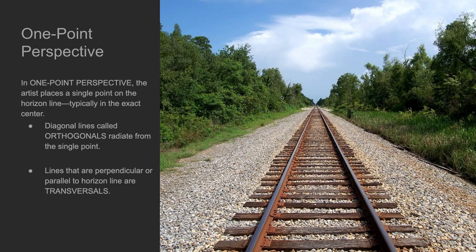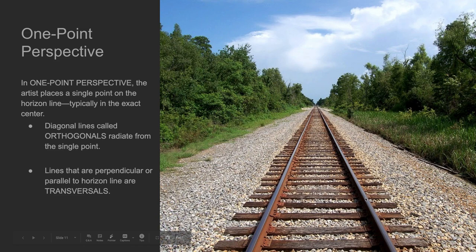Orthogonals are the diagonal lines that recede into space — they are parallel lines that create these diagonals. The horizon line is where the ground meets the sky; it is flat and it is in front of you. The vanishing point is where all the orthogonals meet. The vantage point is where you are standing or where the image is taken. Transversals are lines that go perpendicular to the parallel lines that are receding into space.